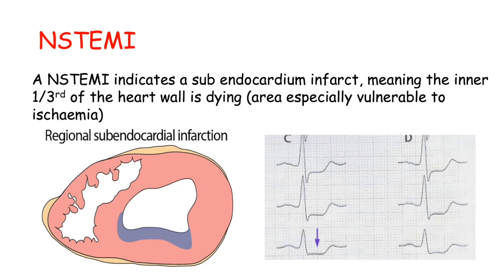NSTEMI, on the other hand, indicates a subendocardial infarct, meaning the inner one-third of the heart wall is dying — an area especially vulnerable to ischemia. Only that inner area is dying. Here's an image of an ECG showing ST segment depression — it's not following the isoelectric line; it's well below.